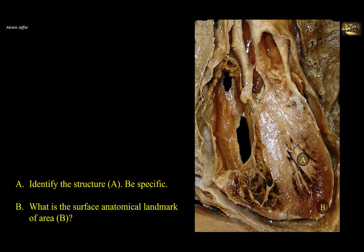Identify structure A and B. What is the surface anatomical landmark of area B? This is a longitudinal section of the heart showing the right atrium with its thin wall, right ventricle with a thicker wall, and the left ventricle, which is the thickest chamber. The left atrium forms the posterior chamber of the heart and is not sectioned in this cut, but its auricle can be seen on the left border of the heart between the left ventricle and the pulmonary trunk. Structure A is located in the left ventricle — it is a conical elevation of cardiac muscle fibers called a papillary muscle.